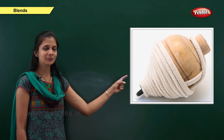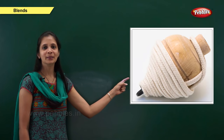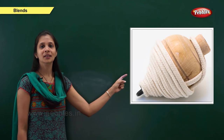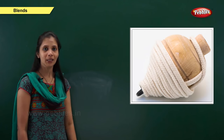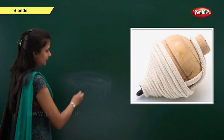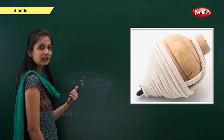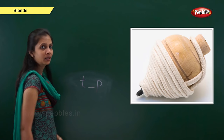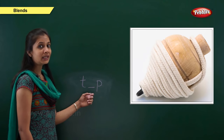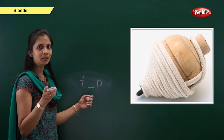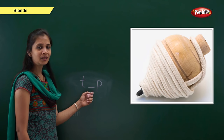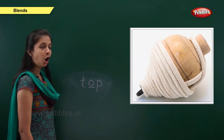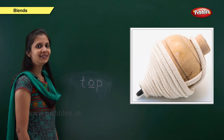Next one. Which picture is this? Yes, it is top. What is the sound of this word? It is t or pa — top. When the sound is 't', the letter is t. When the sound is 'pa', the letter is p. The middle vowel is o. So: t, o, p — top.